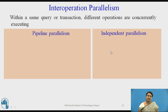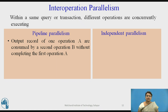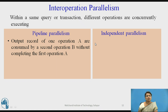In interoperation parallelism there are two types: pipeline parallelism and independent parallelism. In pipeline parallelism, the output records of one operation A are consumed by a second operation B without waiting for operation A to complete. The first operation is still executing, but the second operation — which depends on the first — does not wait; intermediate results generated by the first operation are consumed by the next operation as they are produced.